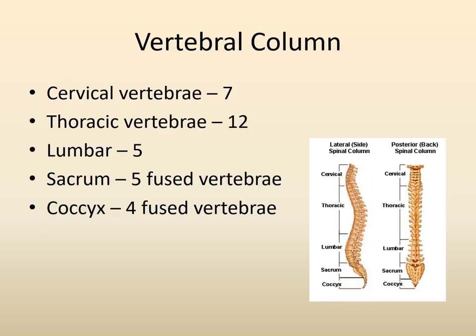The vertebral column protects the spinal cord and is divided into sections. Starting at the top, you have seven cervical vertebrae, then 12 thoracic vertebrae, five lumbar vertebrae. The sacrum consists of five fused vertebrae, and the coccyx consists of four fused vertebrae.